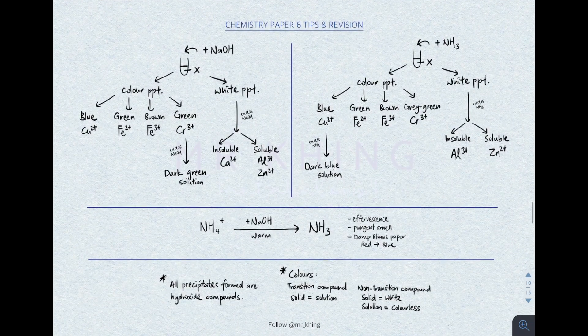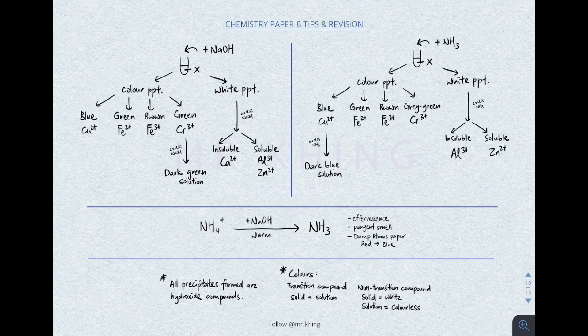The cation and anion test is super important — 100% coming out in paper 6. Remember, all the precipitates formed are hydroxide compounds. The blue precipitate is copper(II) hydroxide, the green precipitate is iron(II) hydroxide, the brown precipitate is iron(III) hydroxide, and so on.